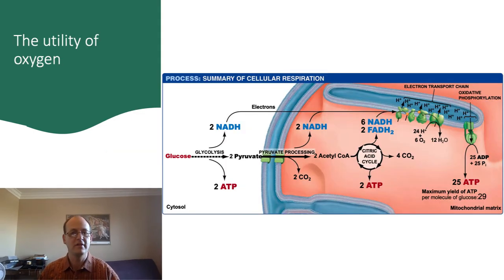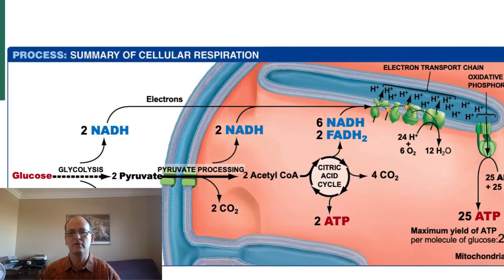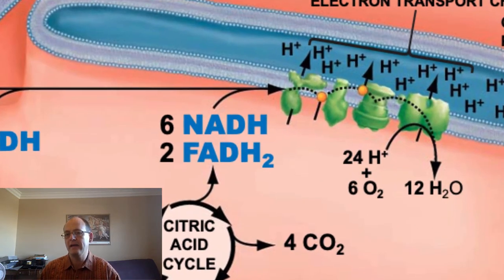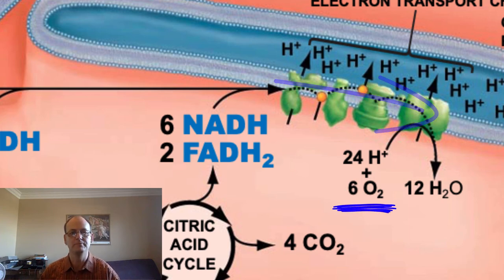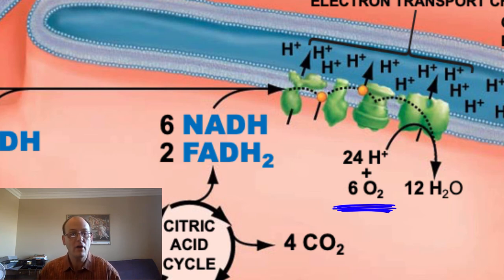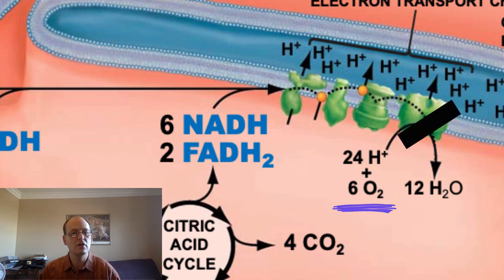Once electrons are in the electron transport chain, either from NADH or FADH2, they're passed down the chain until they reach the most electronegative molecule, oxygen. Oxygen serves as the final electron acceptor and is important because without oxygen, the electrons would build up in the chain and have nowhere to go.